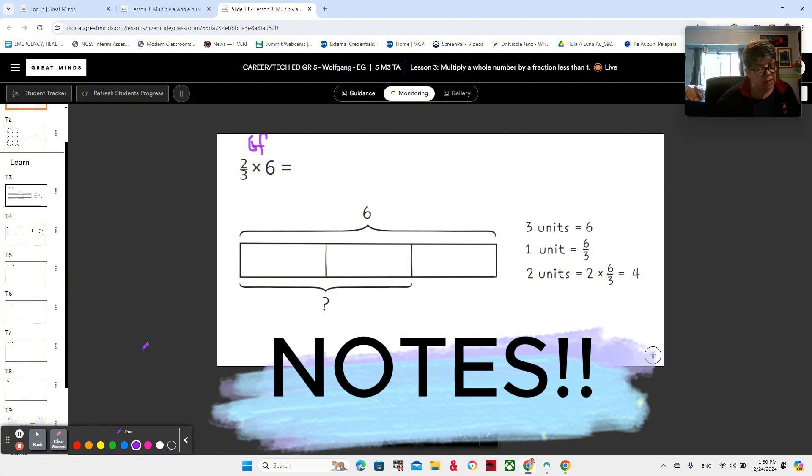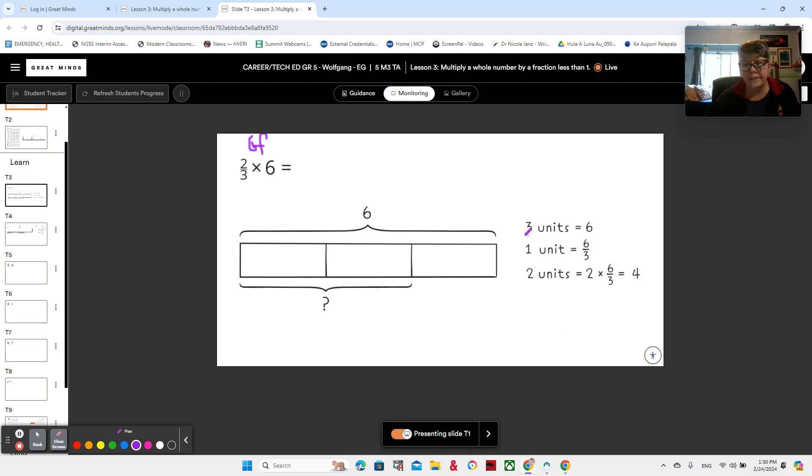Okay. So two thirds times six. We see that three units is equal to six. And I want you to get practice writing this down, thinking about your three units, one, two, three, being equal to six. And one of your units is going to be equal to six thirds. One of the reasons I want you to get used to writing this down is because we're going to be using this for harder problems coming up soon. So practice writing three units is six. One unit is six thirds. Two units is two times six thirds.